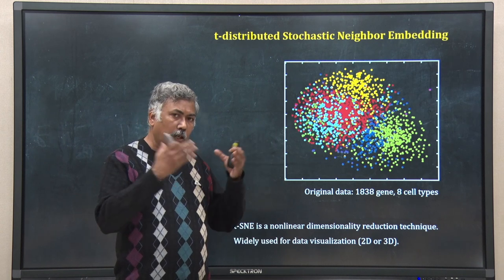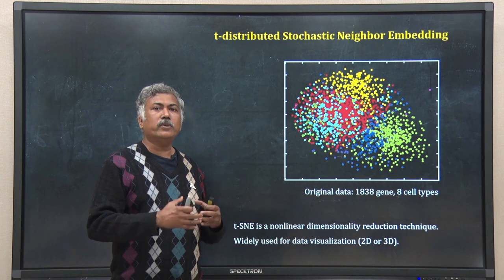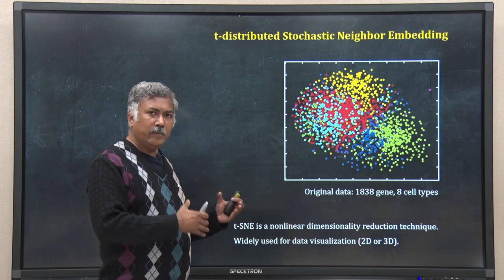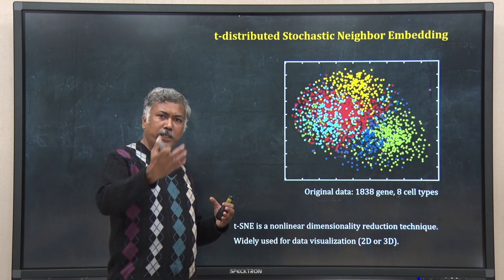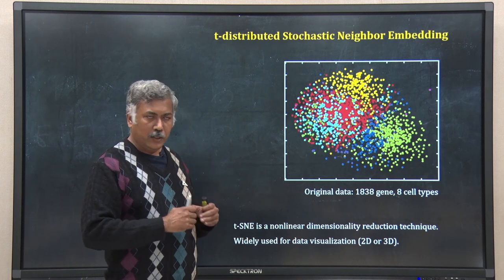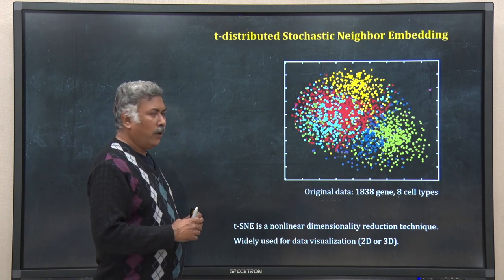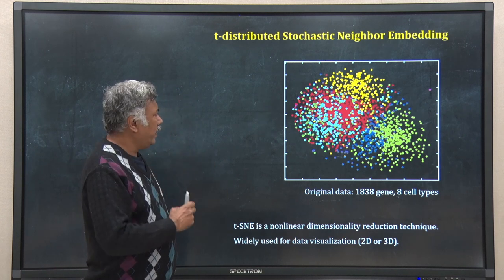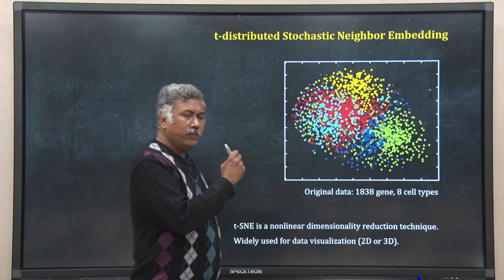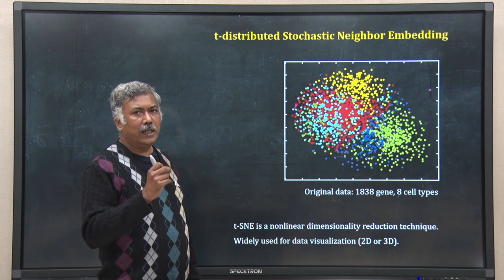To visualize this data, we have to reduce the dimension of it. What I have done is I have used T-SNE to visualize or embed this data in two dimensions. Here is the two-dimensional plot. Each dot here is one cell and belongs to one of the cell types, and those are colored based upon which cell type they are.